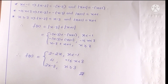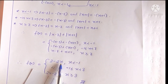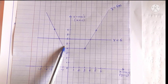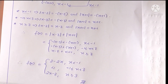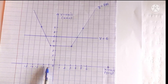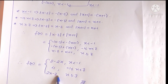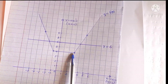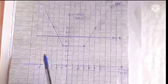The first branch, 2 minus 2x, starts from x equal to negative 1 and goes downwards. The second branch, the horizontal line y equal to 4, runs from negative 1 to 3. The third branch, 2x minus 2, starts from x equal to 3 and goes upwards. Combining all three branches gives the complete graph of y equal to f of x.